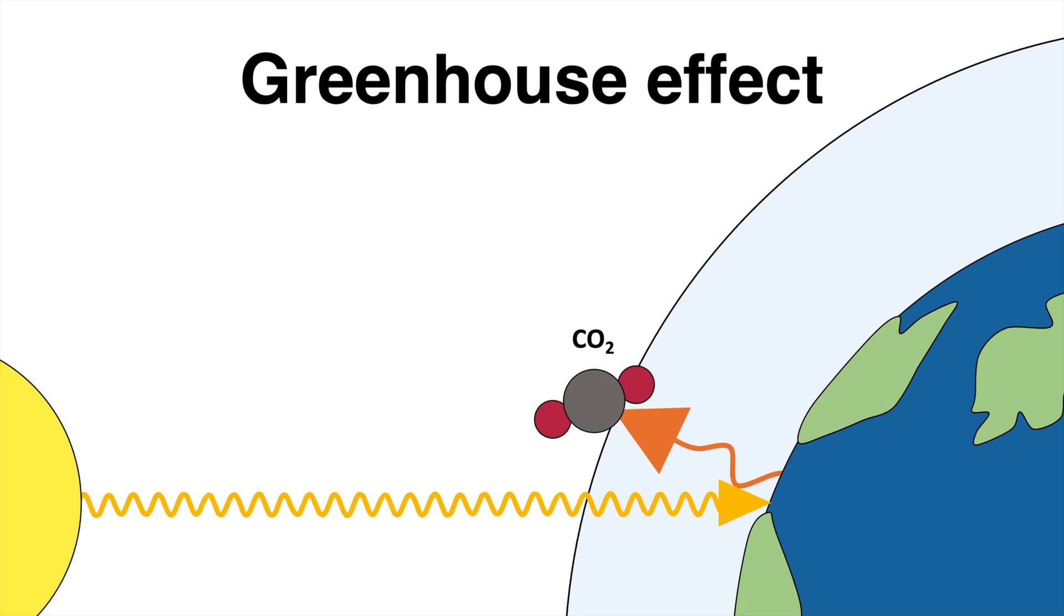Heat and energy in form of long-waved infrared radiation is emitted by the Earth and is released back into the atmosphere. A small fraction can escape into space but most of the infrared radiation is absorbed by the greenhouse gases.